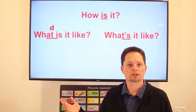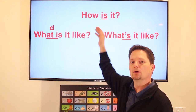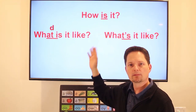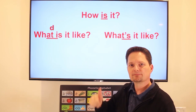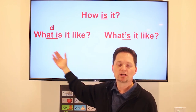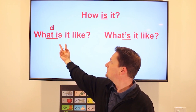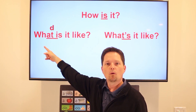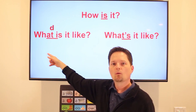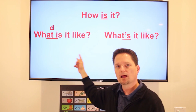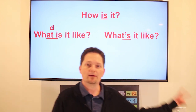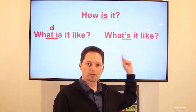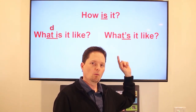Let's look at the pronunciation. For 'how is it,' the intonation goes up on 'is': 'How is it?' For 'what is it like,' there are two pronunciations. You can separate 'what is' where the T changes to a D: 'What is it like?' Or you can use the contraction 'what's' and say 'What's it like?'